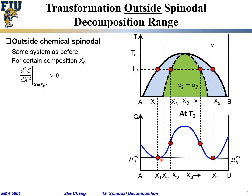x₀' is now associated with a positive second derivative — positive curvature, concave up. It is between x₁ (the phase boundary) and xs (the limit of the chemical spinodal). x₀' is between x₁ and xs.